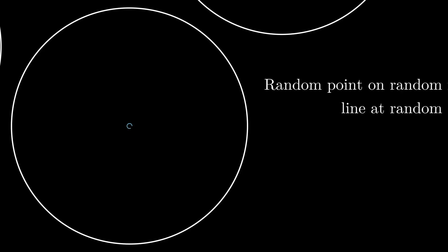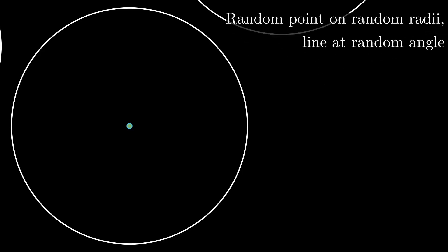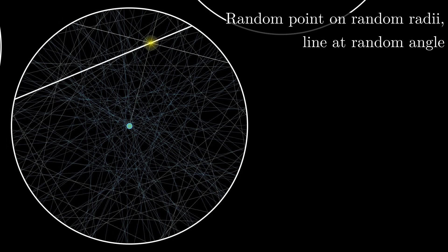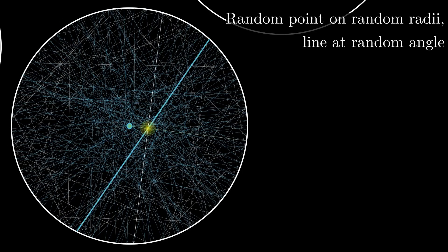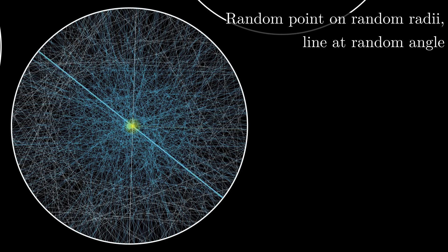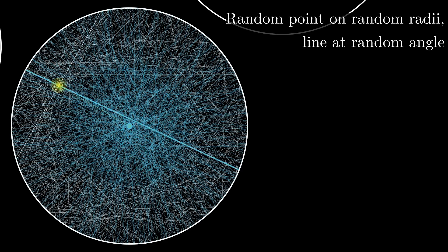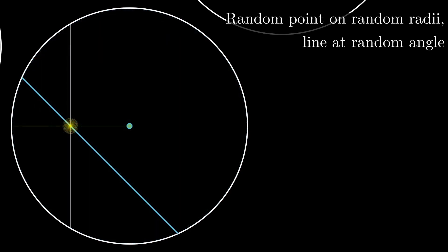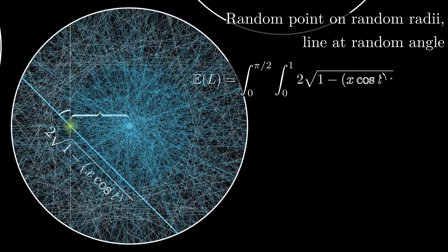Now for our last method in this video, here we choose a random radius, then choose a random point in that radius, and then draw a line at a random angle through this point to create the chord. With the terminologies defined before, the expected value in this case is the integral of twice the square root of 1 minus (x cos t)², the whole times dx times dt/(π/2).